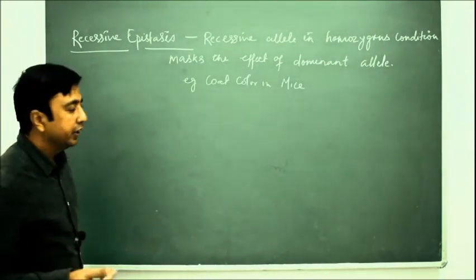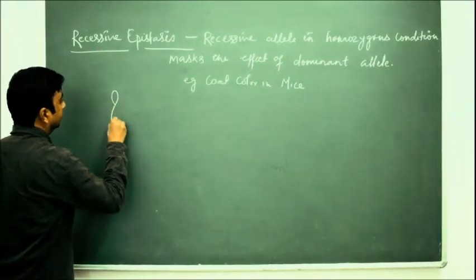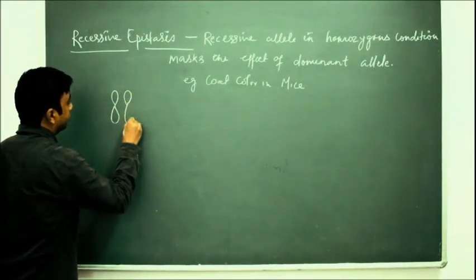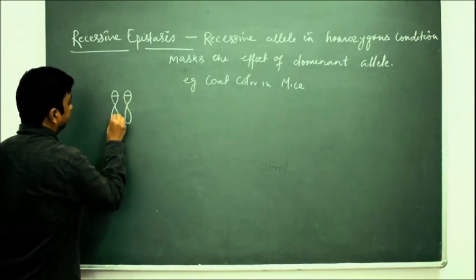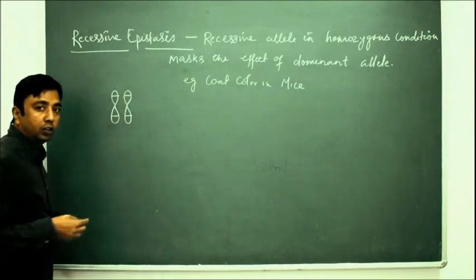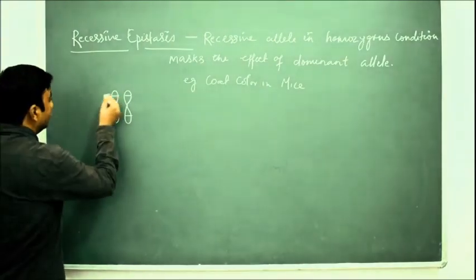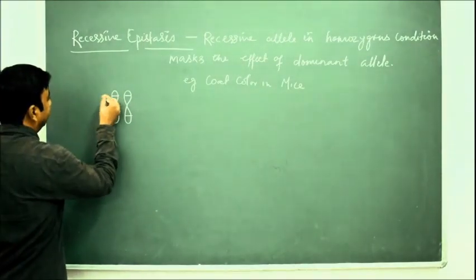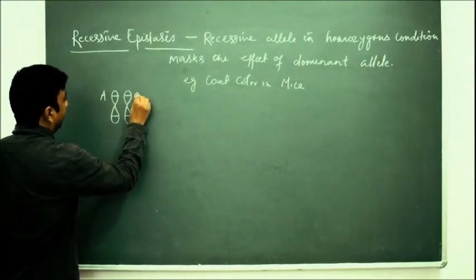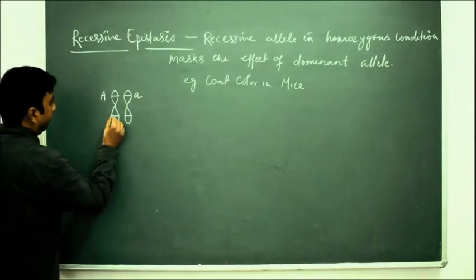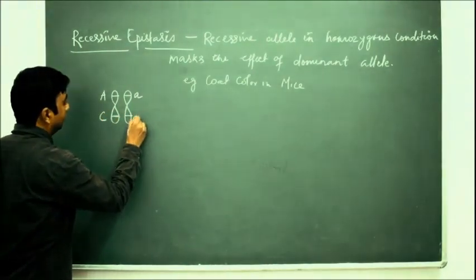let's draw a homologous chromosome. We have a homologous chromosome where we have two loci — locus 1 and locus 2. In locus 1, we have two genes: capital A and small a. In locus 2, we have two genes: capital C and small c.